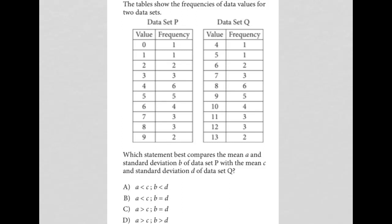So this question is a diagram question. Any question that provides some visual input is going to be a diagram question for me. As we can see, we have more specifically, we have tables here. So the question says the tables show the frequencies of data values for two data sets. Okay, so we see data set P, data set Q. We have values and we have frequencies.